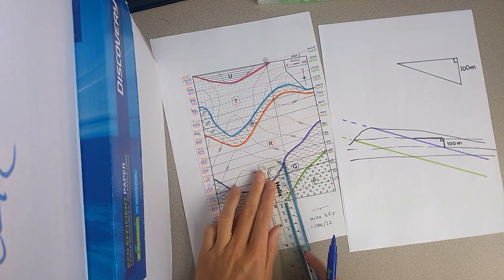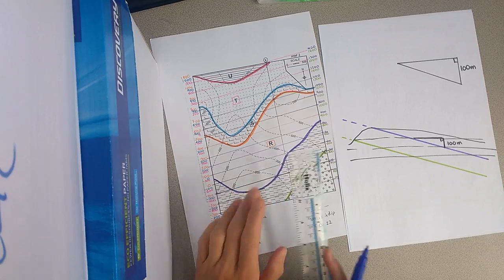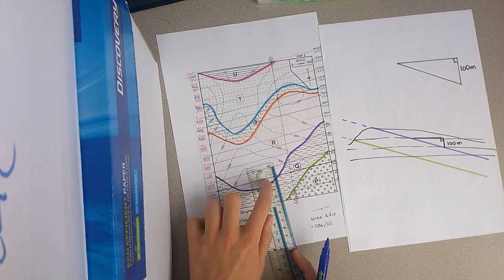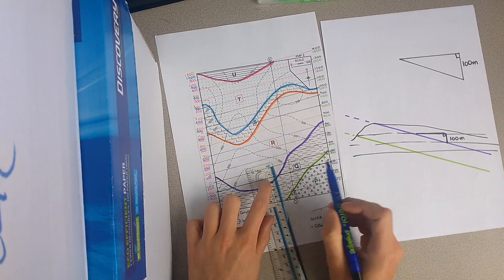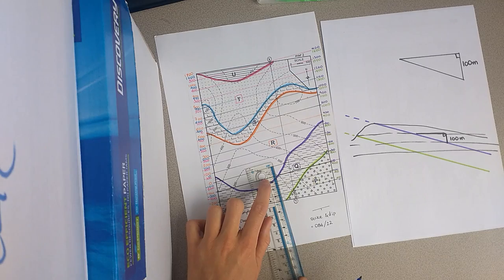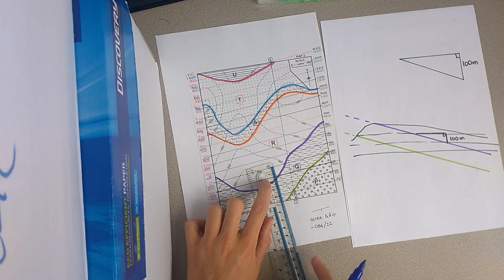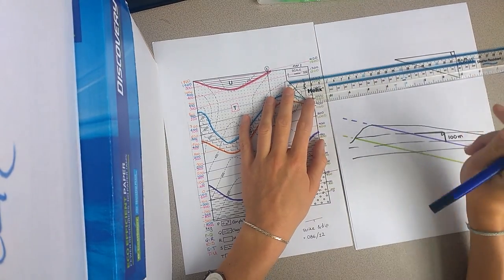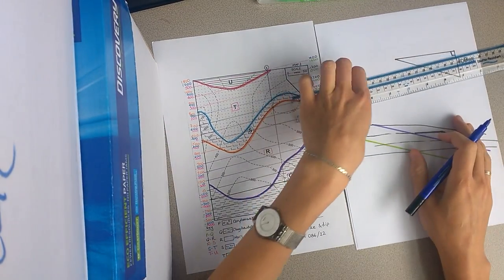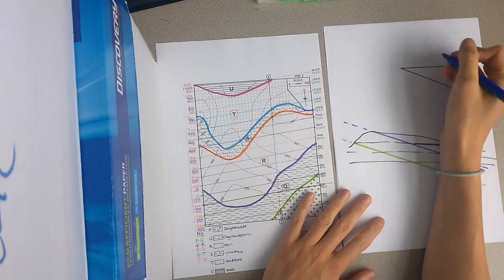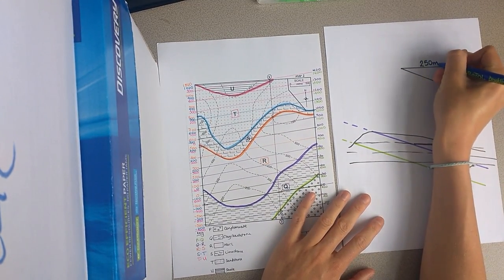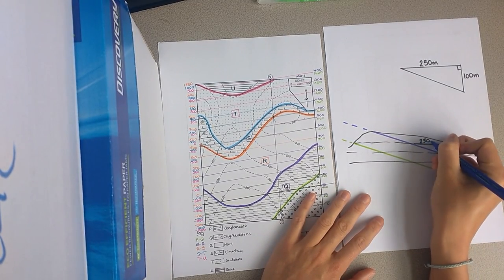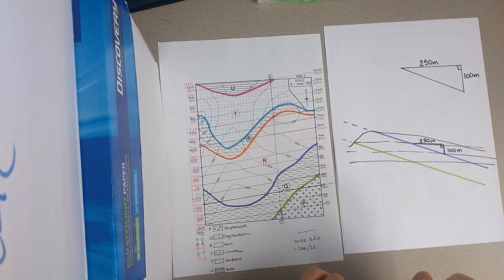So you should be able to measure anywhere. But if you measure at 90 degrees to your structure contour line, between these two lines, for 100 metres vertical distance, you can see I've got 1.25 centimetres, which, when we look at our scale bar, is exactly halfway along our scale bar. So that is 250 metres. So for 100 metres vertical distance, we have 250 metres horizontal distance.